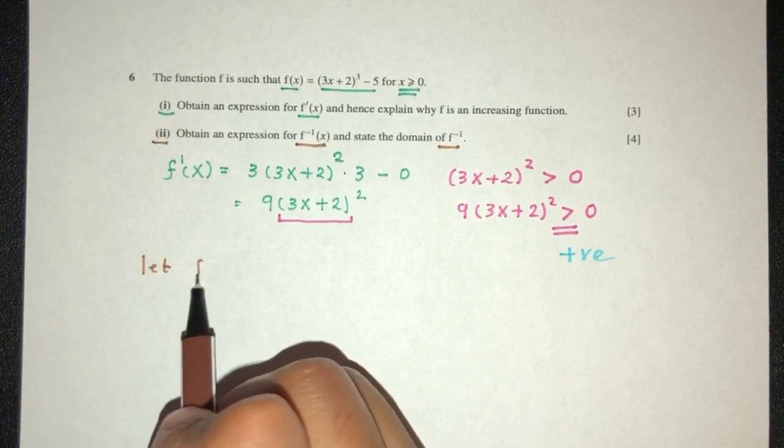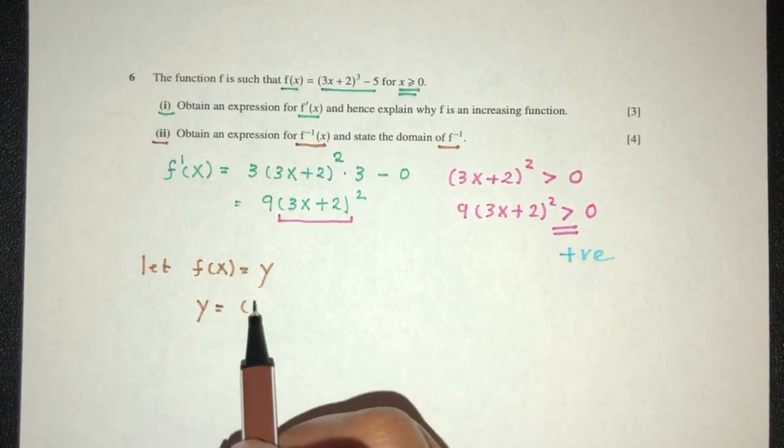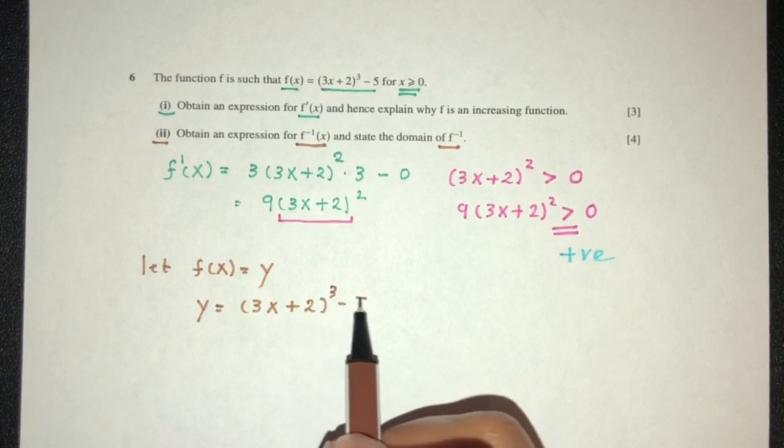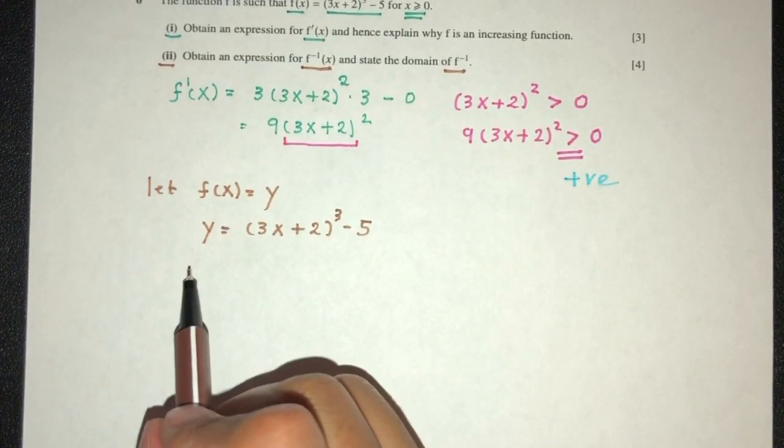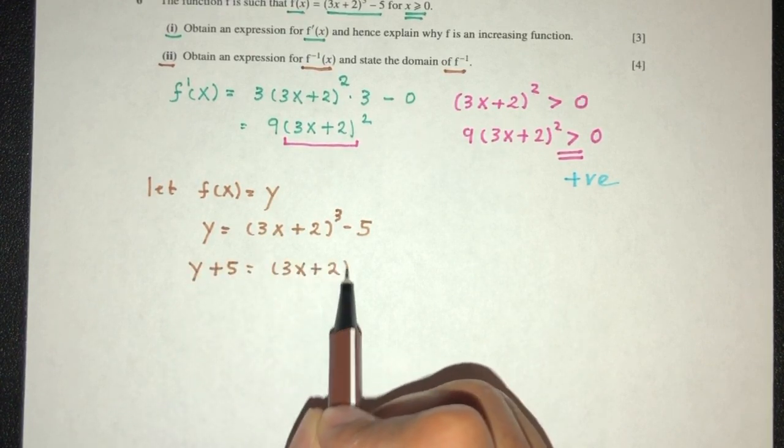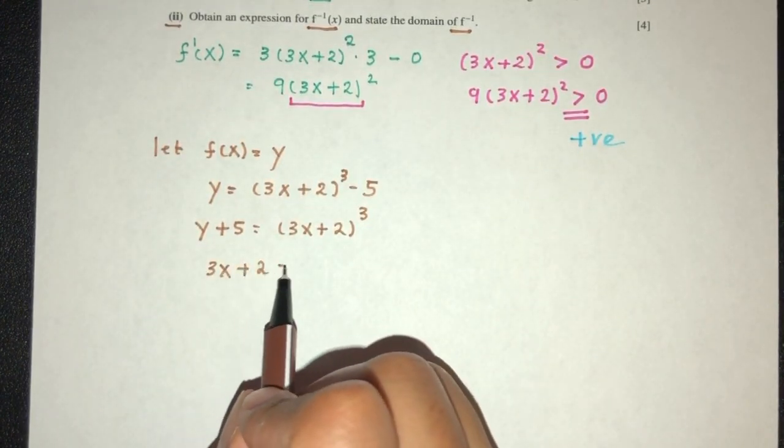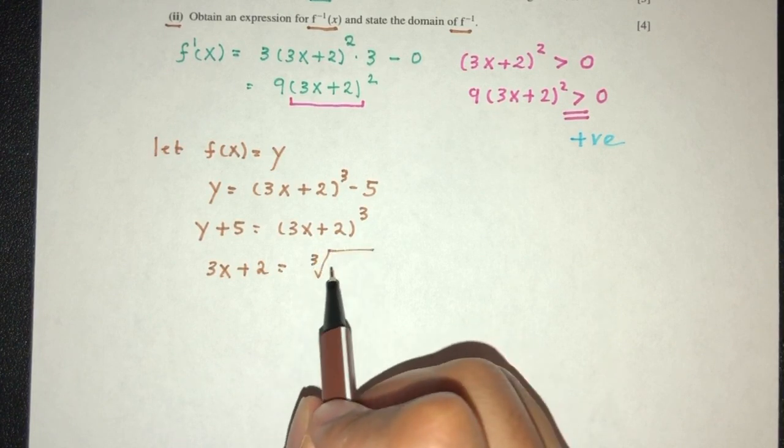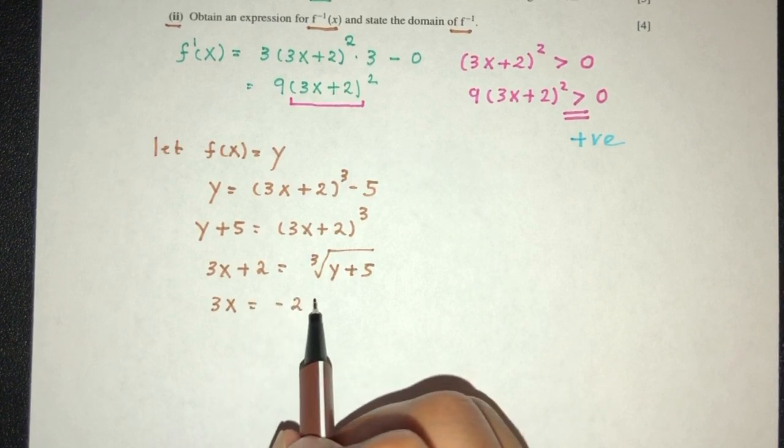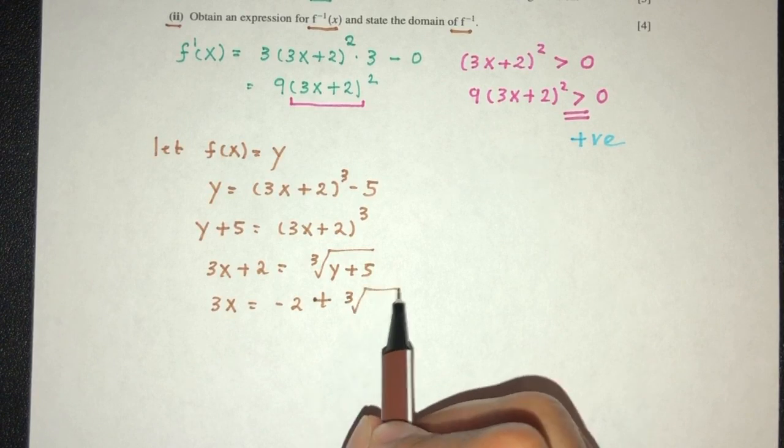let f of x be y. So y now it is 3x plus 2 cubed minus 5. So we have y plus 5 is equal to 3x plus 2, that will be cubed. So 3x plus 2 has to be cubic root of y plus 5. Then 3x equals minus 2, so minus 2 plus cubic root of y plus 5.